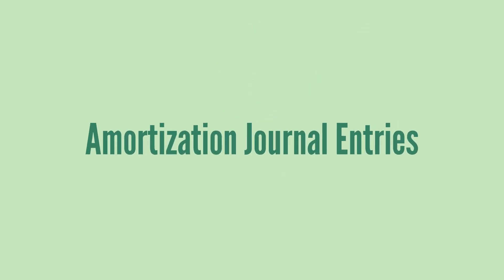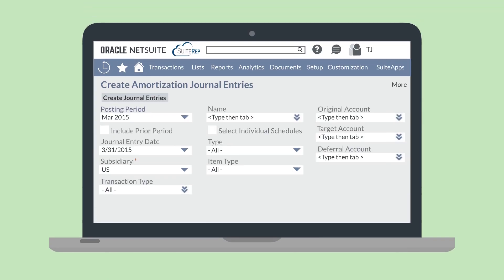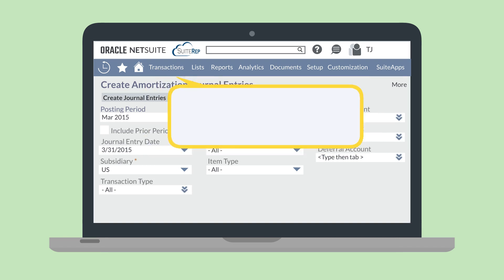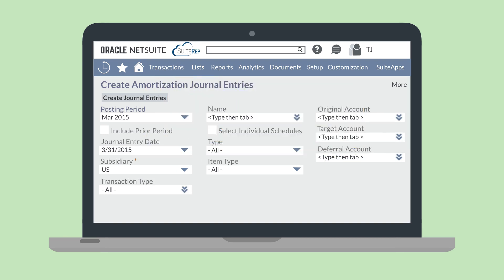Amortization journal entries are based on amortization schedules, but you still need to generate them. When you have generated an amortization journal entry, the amount on the entry posts to the GL. To generate these journal entries, navigate to Transactions, Financial, Create Amortization Journal Entries. After you set the parameters for which journal entries you want to generate, and after you select the specific entries from the list, select the button Create Journal Entries.